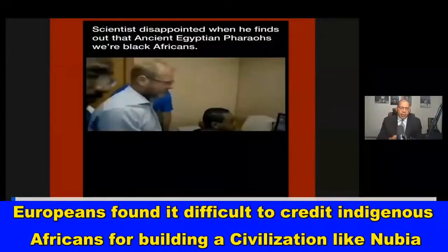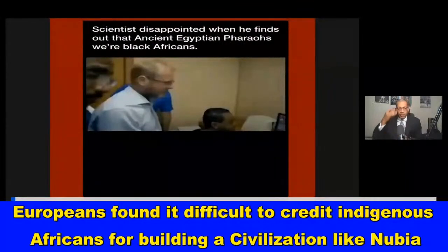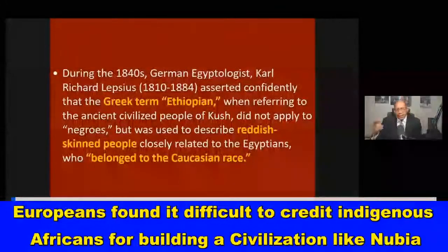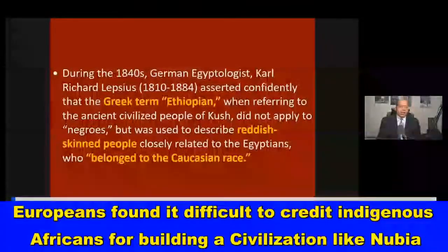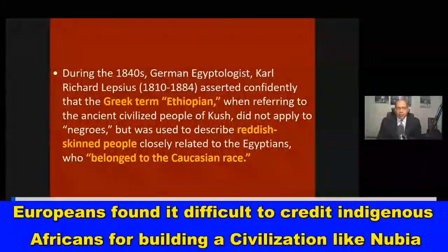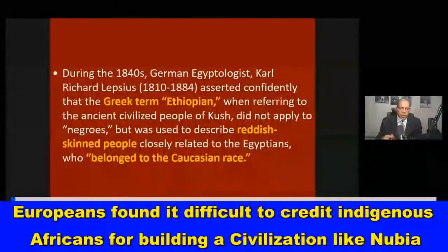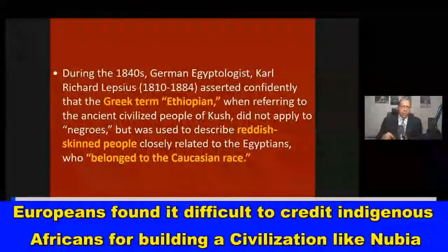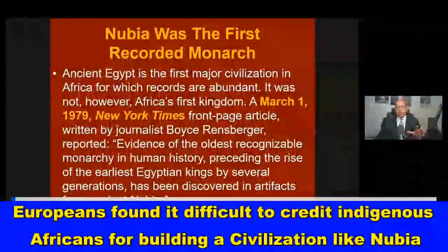There's a clip from the History Channel where a white scientist was disappointed when he found out that ancient Egyptian pharaohs were Black Africans — the scientific analysis proved it and he had to admit it. During the 1840s, German Egyptologist Carl Richard Lepsius asserted confidently that the Greek term 'Ethiopian,' when referring to ancient civilized people of Kush, did not apply to Negroes but described reddish-skinned people closely related to Egyptians who belonged to the Caucasian race.